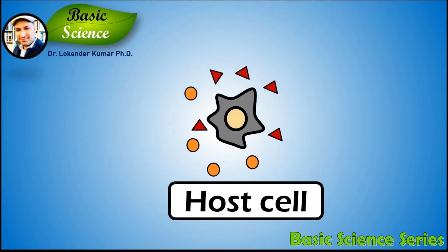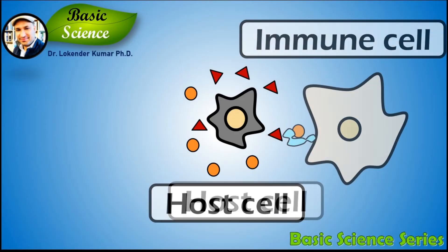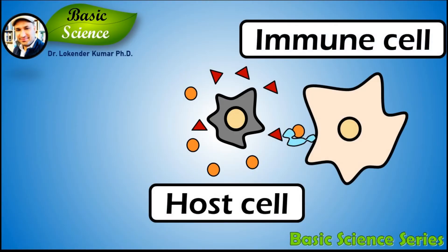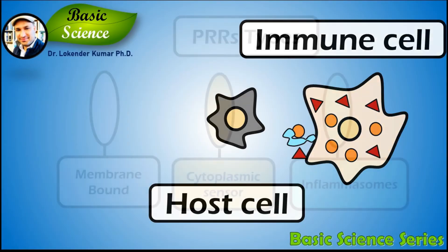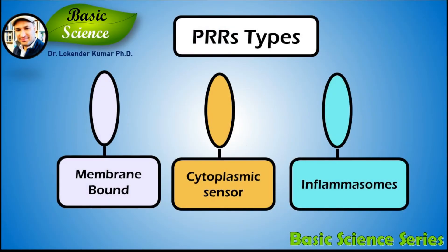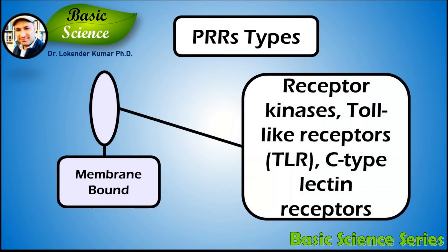Because a non-functional cell part is also harmful, the immune system also detects these DAMPs and clears them from our body. PRR sensors are of three types: membrane bound sensors, cytoplasmic sensors, and inflammasomes.